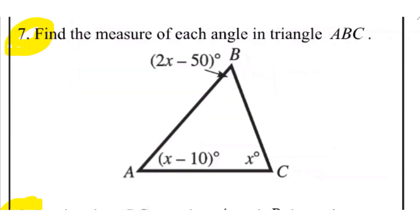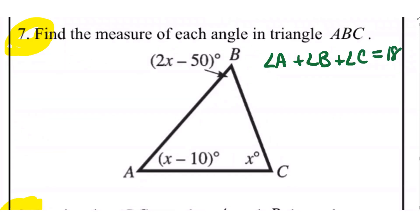Find the measure of each angle in triangle ABC. Angle A is marked x minus 10 degrees, angle B is marked 2x minus 50 degrees, and angle C is marked x degrees. These are the interior angles of the triangle, so what do we know about them? They add up to 180 degrees. Angle A plus angle B plus angle C will equal 180 degrees.